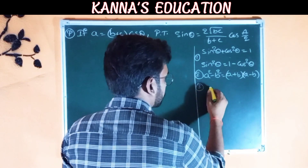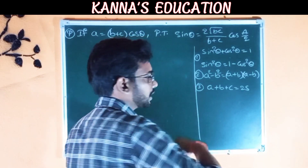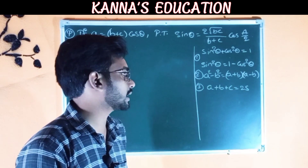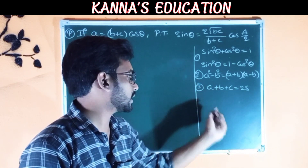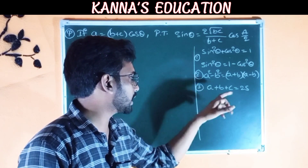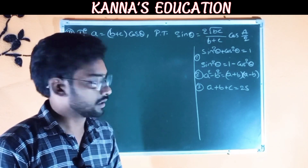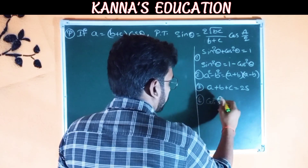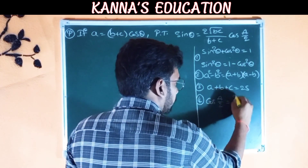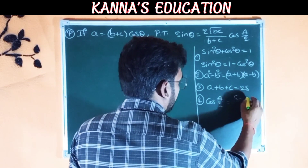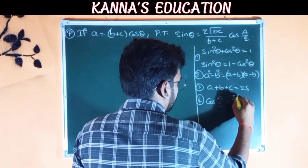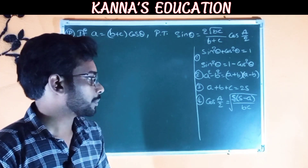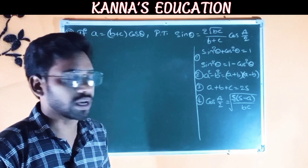The third formula: a + b + c = 2s, so a + b = 2s − c, b + c = 2s − a, and a + c = 2s − b. The fourth formula: cos(A/2) = √(s(s − a) / bc).